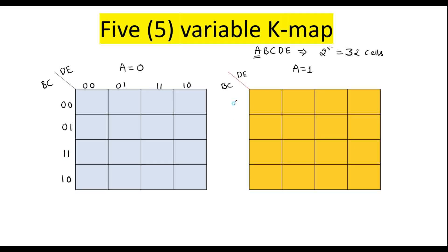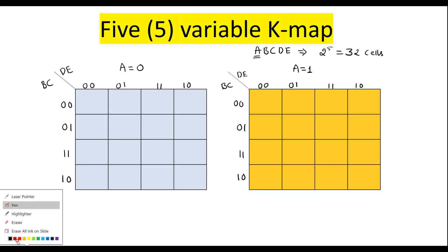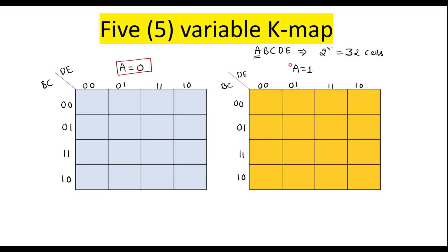Similarly, here also the Gray code values are applied to both Kmaps — the one for a equal to 0 and the one for a equal to 1.